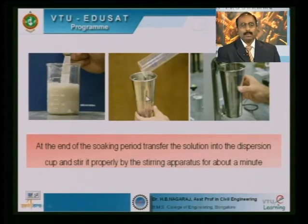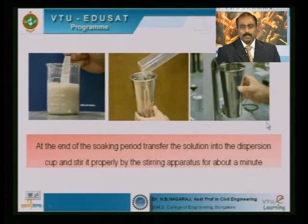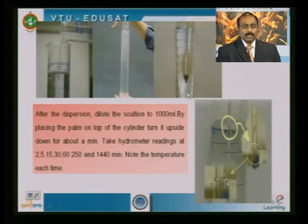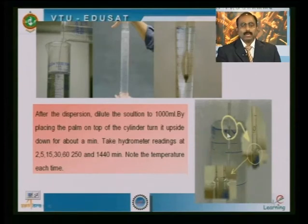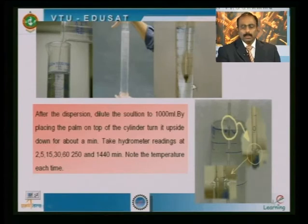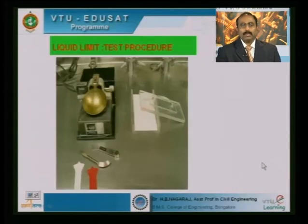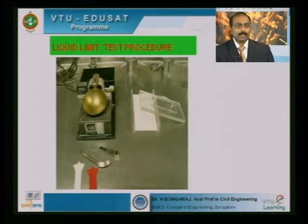For hydrometer analysis, we prepare the sample using a dispersing agent solution, disperse the particles in a stirrer, and transfer all material into a 1000 mL jar which is shaken properly. A hydrometer is placed and the sample is allowed to settle. As settlement takes place, the density changes, and measuring the density of the settling medium at the center of the bulb allows us to get the grain size distribution.